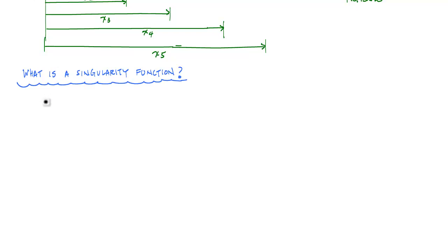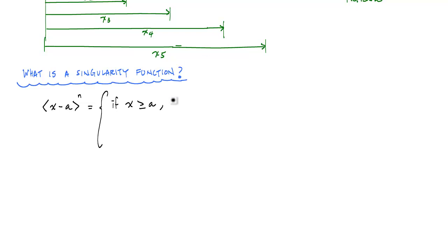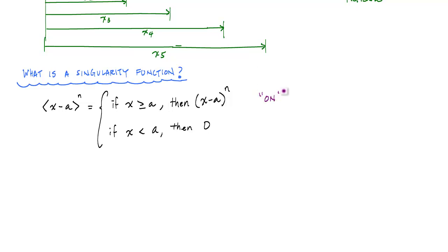It's written using these angle brackets: x minus a to the power of n. It's like an if statement. If x is greater than or equal to a, the switch is turned on and the angle bracket expression becomes x minus a to the nth power. If x is less than a, then this whole thing just equals zero. So when x is greater than or equal to a, the switch is on; anytime before that, it's off.